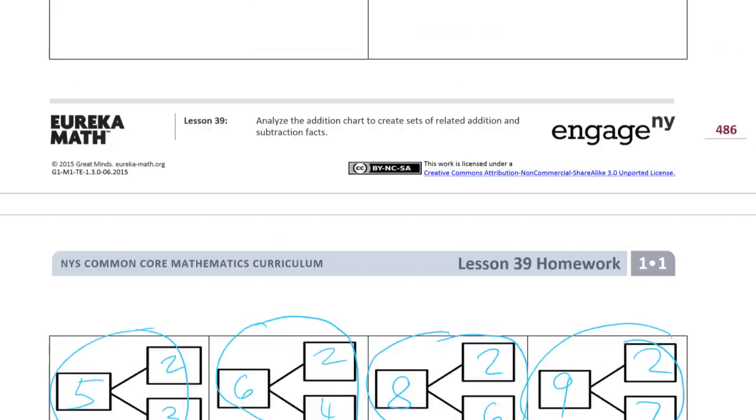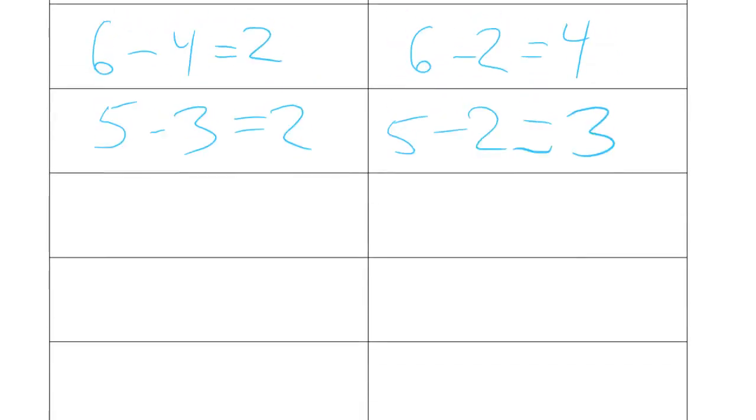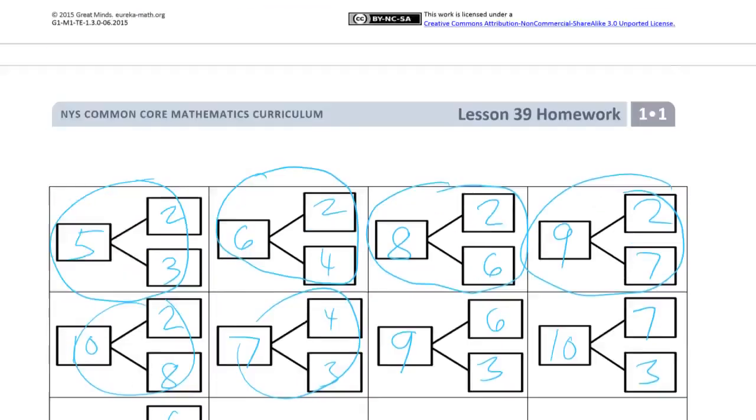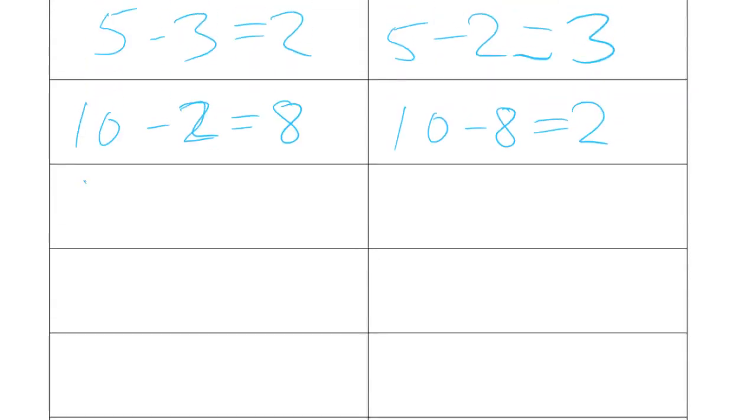10, 2, and 8. 10 minus 2 equals 8. And then 10 minus 8 equals 2. 7, 4, and 3. 7 minus 4 equals 3, and 7 minus 3 equals 4.